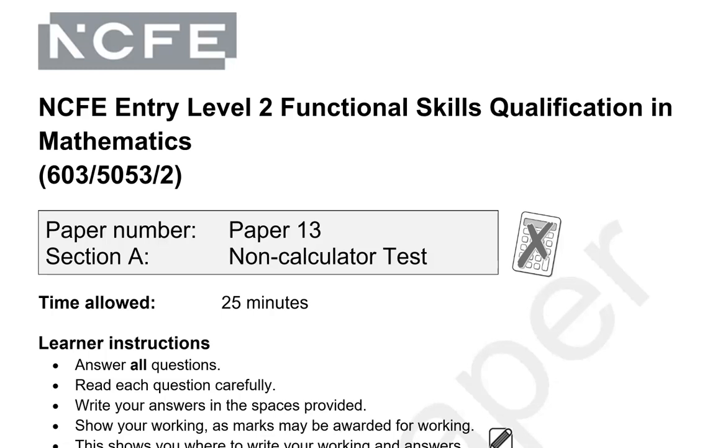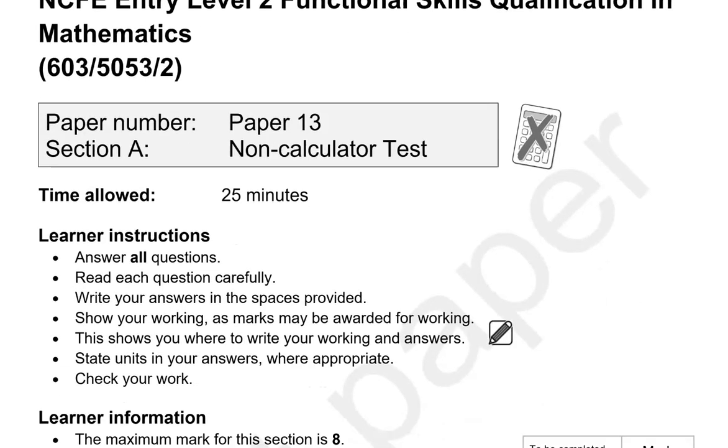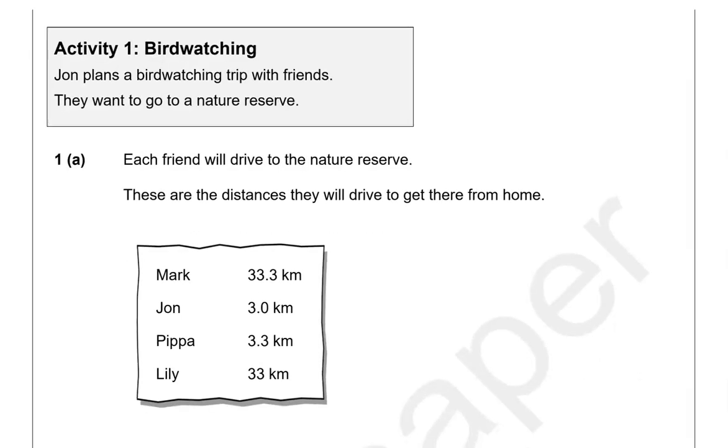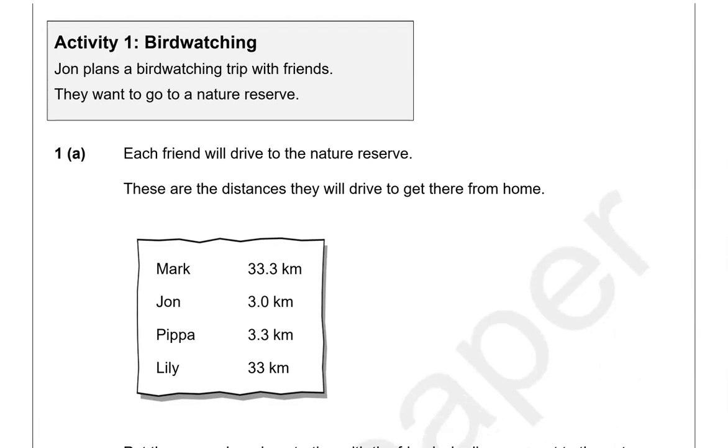This is an introductory functional skills math paper from NCFE. It's split into two parts. In the first part, you can't use a calculator, but you can in the second part. This is the first part, Activity 1: Birdwatching.